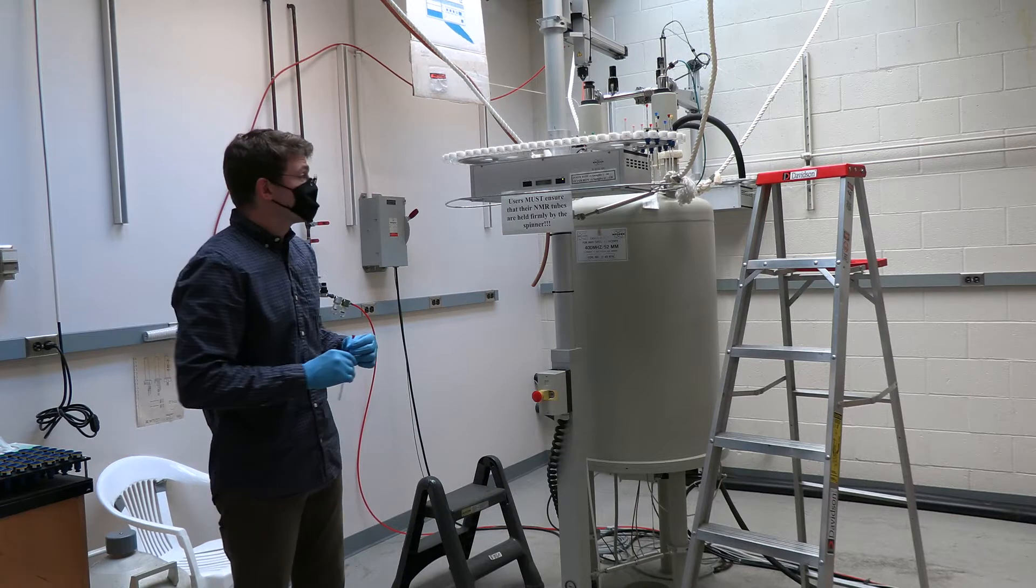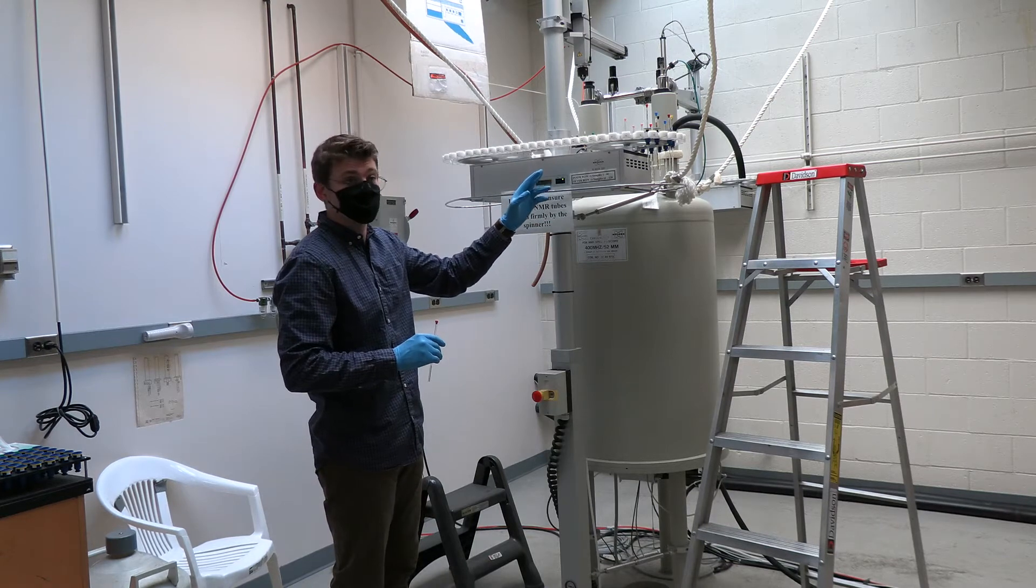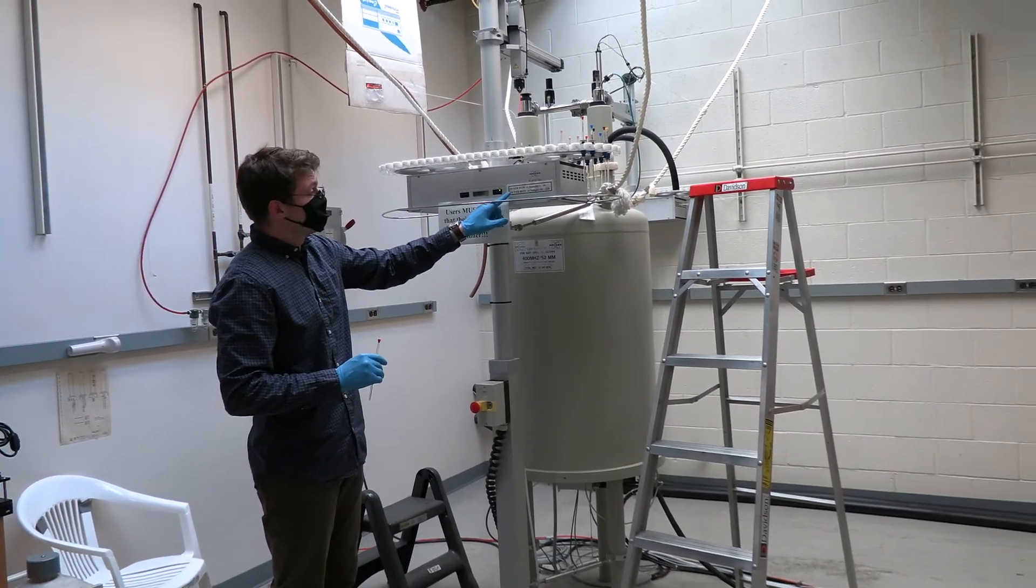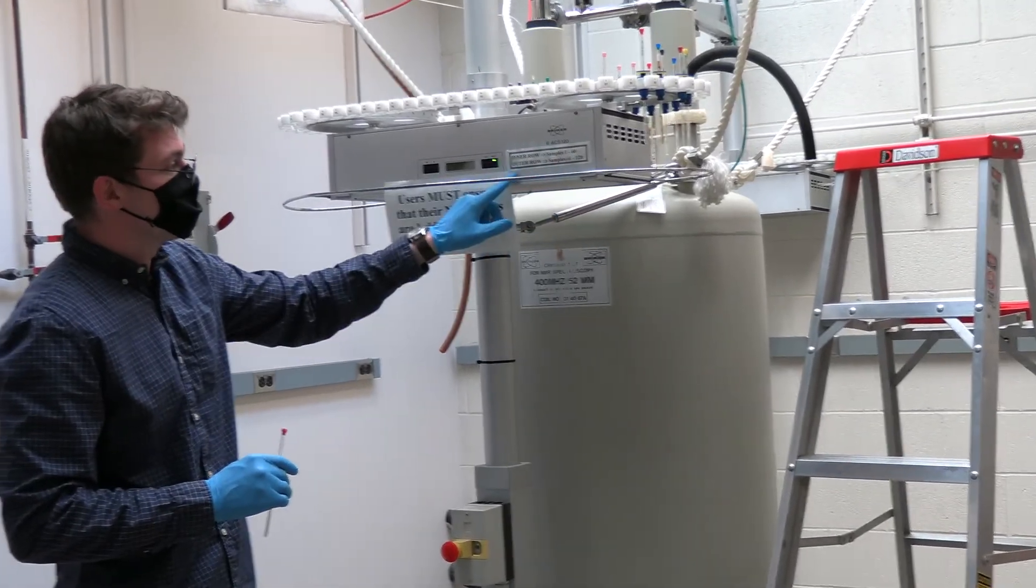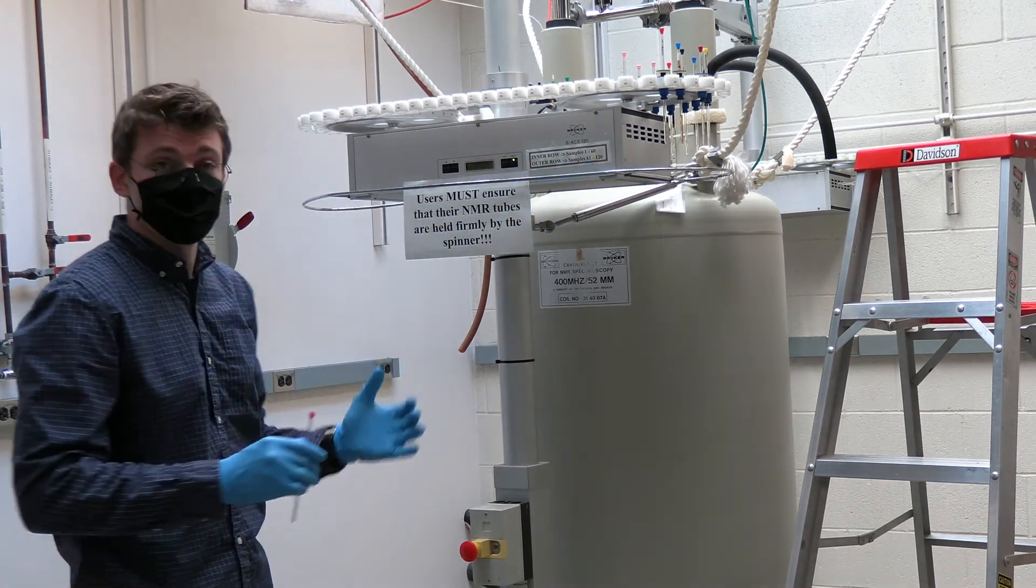The next part of this demonstration is to show you how to physically place your sample up on the carousel. When placing your sample on the carousel you'll notice that there are two rows in which you can place your sample, an inner and outer row. As shown on the sign the inner row holds samples 1 through 60 while the outer row holds samples 61 through 120.